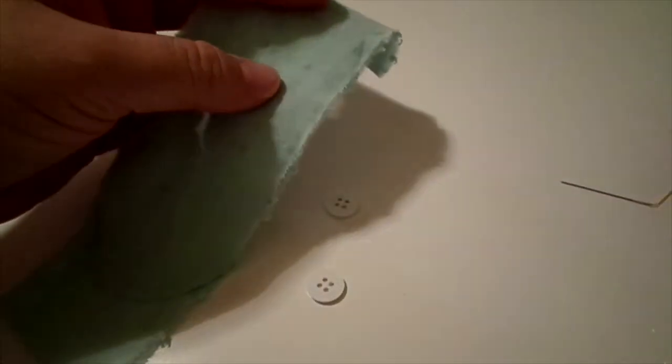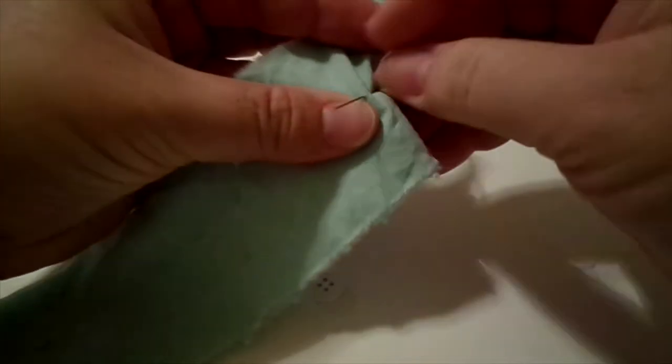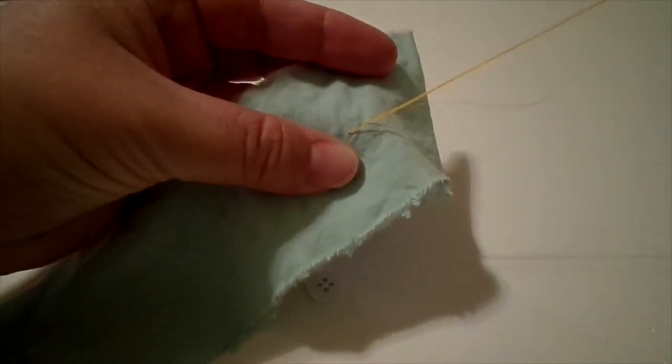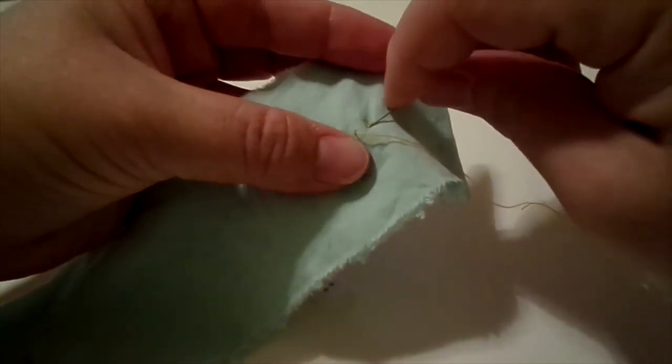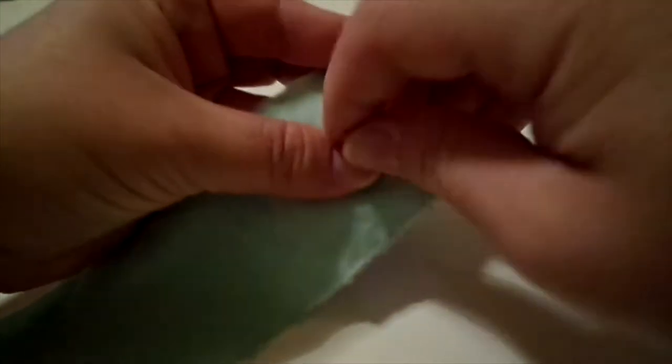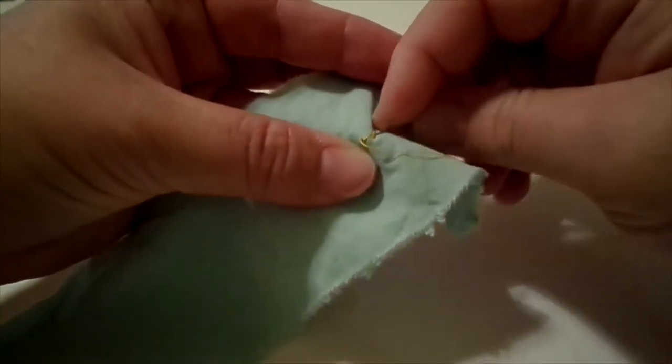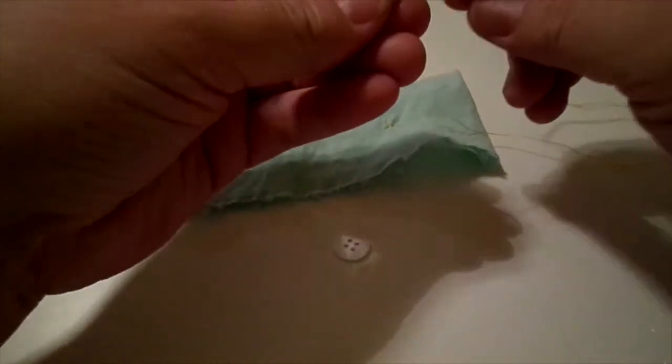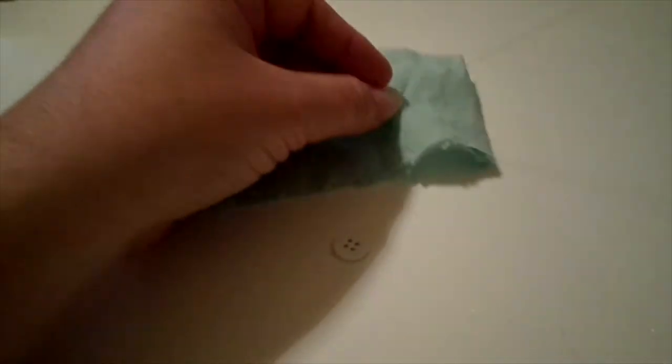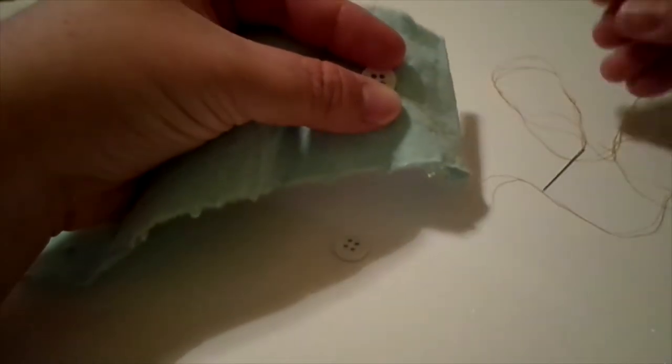First I'm going to use a contrasting thread here just so you can see what I'm doing. You have to do this by hand. You can't do this on the machine, or at least I don't know how to. So I'm going to anchor down my thread first, and I'm actually going to do just a couple of stitches on one of the buttons just to kind of anchor one of my buttons down, just so I have an idea of where the button needs to go.